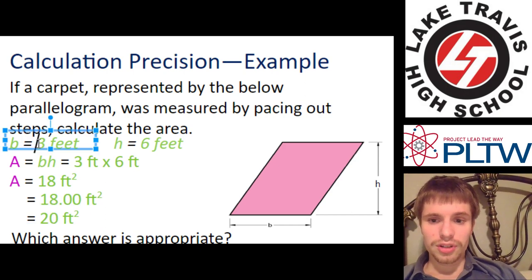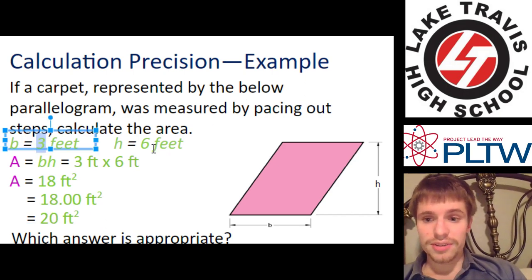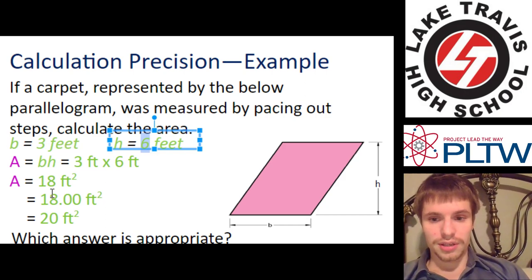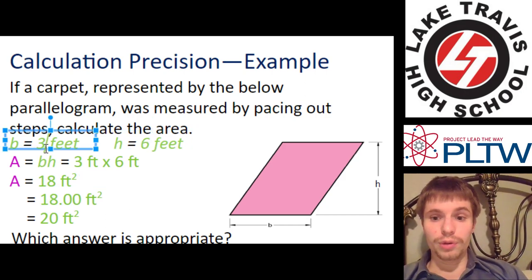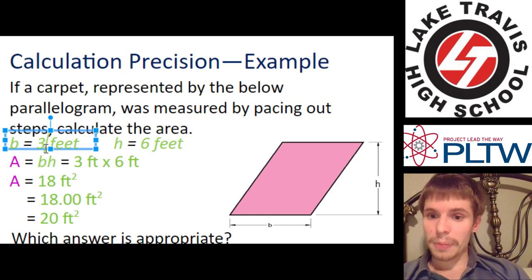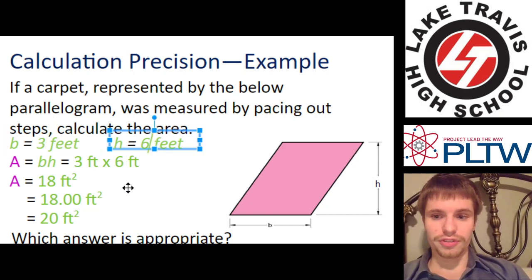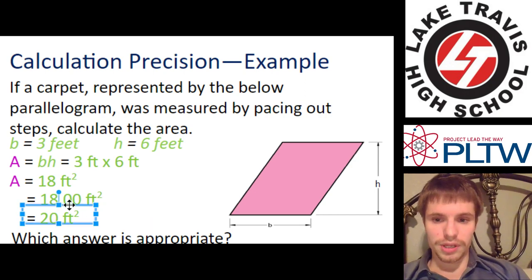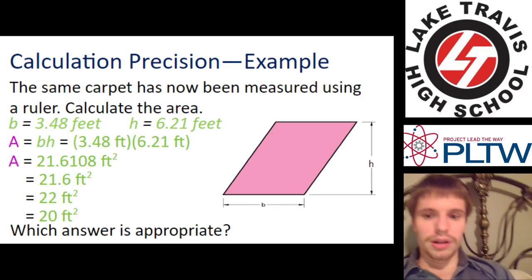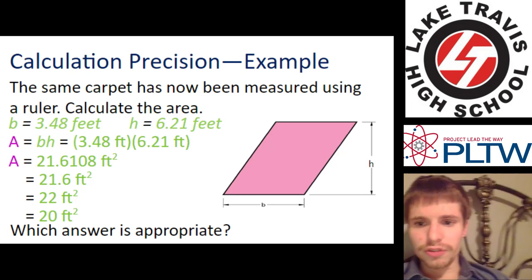As long as we only know 3 and 6, as long as it's not more precise, then we can't say 18. If we went to the carpet manufacturer and said, I have a 3.00 foot by 6.00 foot space, then yeah, the 18.00 would be better there. But, let's keep moving forward.